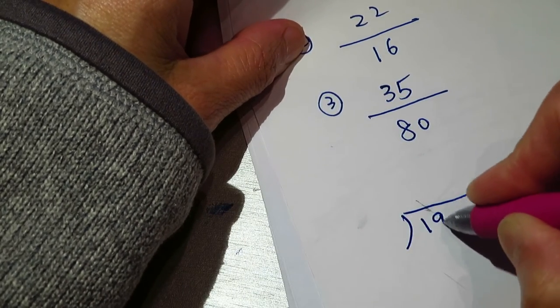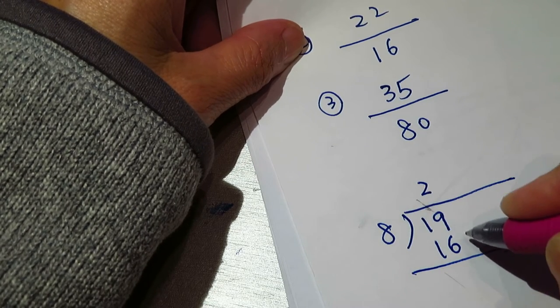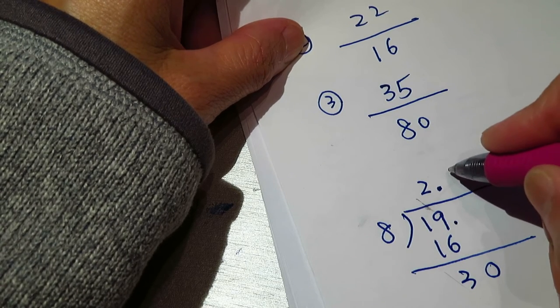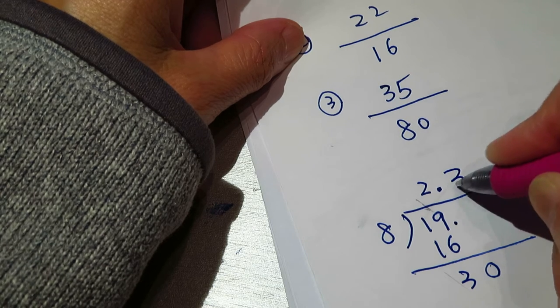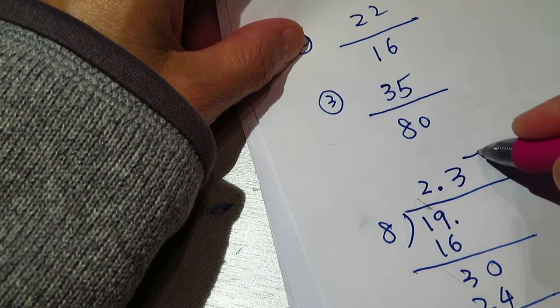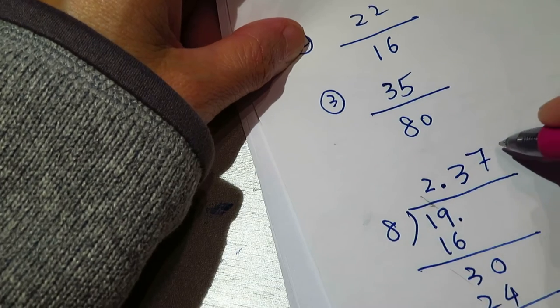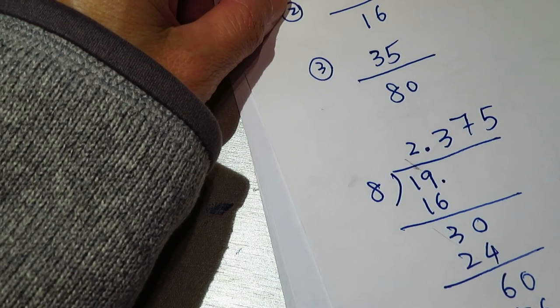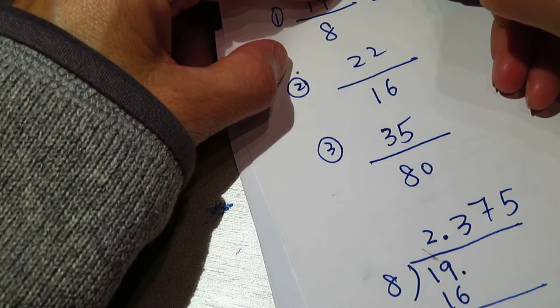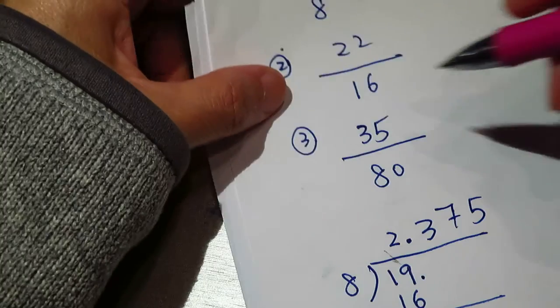So let's do the first one. 19 and 8, there's no commonality in between. We just need to do it. So 18 divided by 9 is 2. 8, 1, 16, then 3, 8, 24, 7, 8, 56.